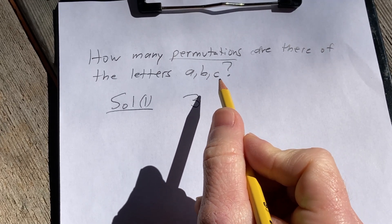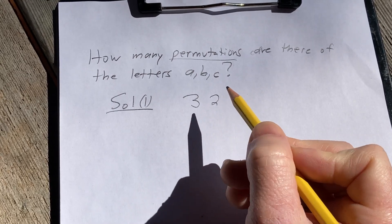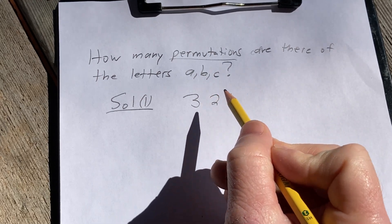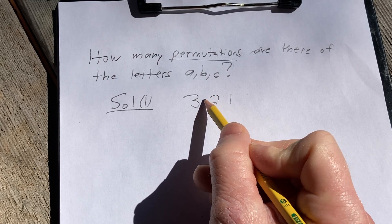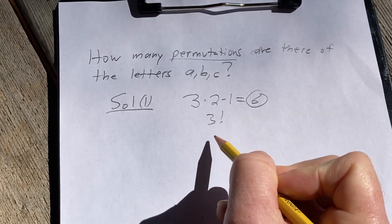so there's two ways to choose that second letter, and at this point we have one letter left, so there's only one way to choose that last letter. So, the number of ways to choose all three letters by the multiplication rule is 3 times 2 times 1, which is 6. This is also known as 3 factorial.